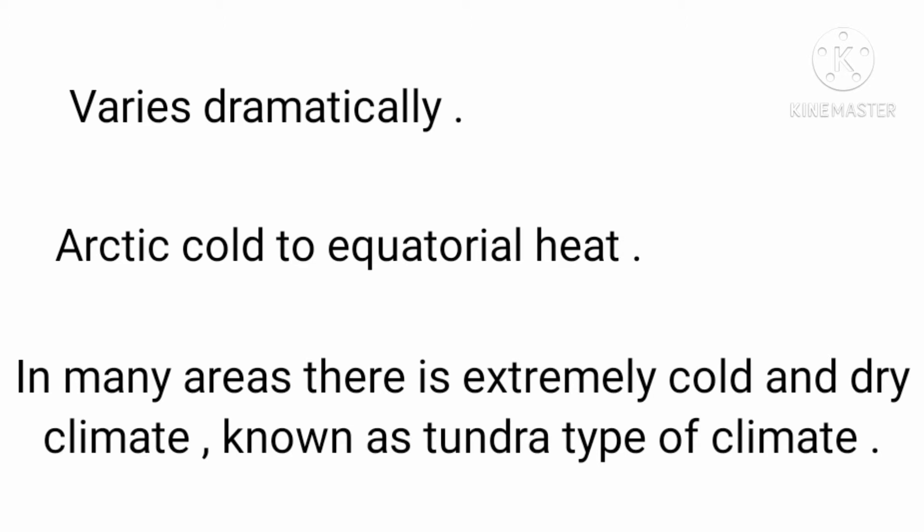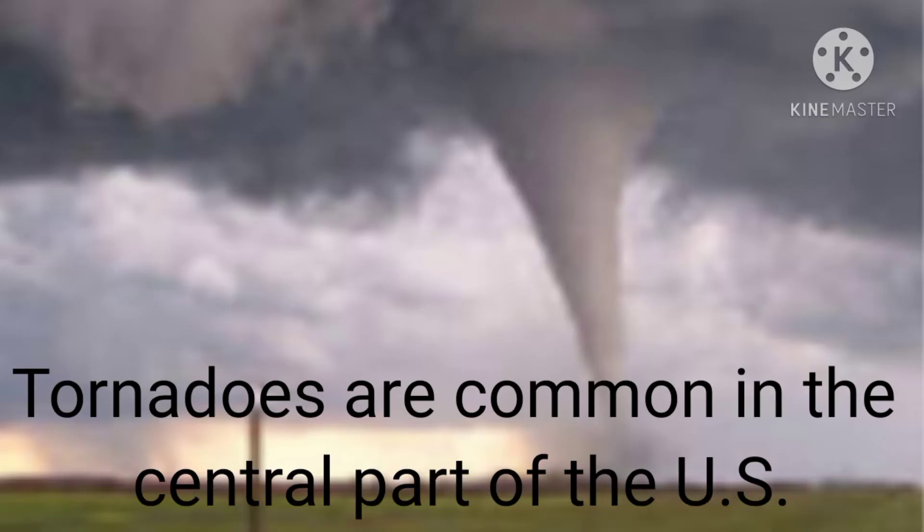The climate of North America varies dramatically — it can range from Arctic cold to equatorial heat. In many areas there is an extremely cold and dry climate, known as tundra climate. Tornadoes are common in the central part of the United States.